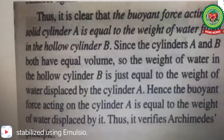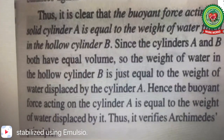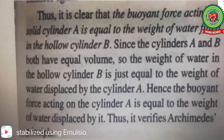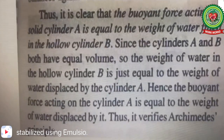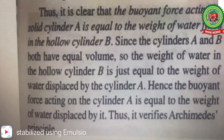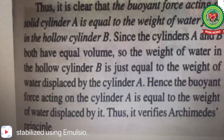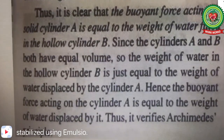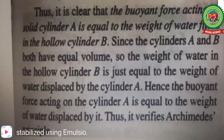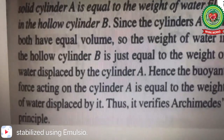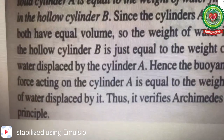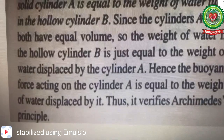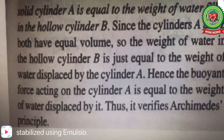The upthrust acting on solid cylinder A is equal to the weight of water filled in hollow cylinder B. Since cylinders A and B have equal volume, the weight of water in hollow cylinder B is just equal to the weight of water displaced by cylinder A. Hence the buoyant force acting on cylinder A equals the weight of water displaced by it, thus verifying Archimedes principle.